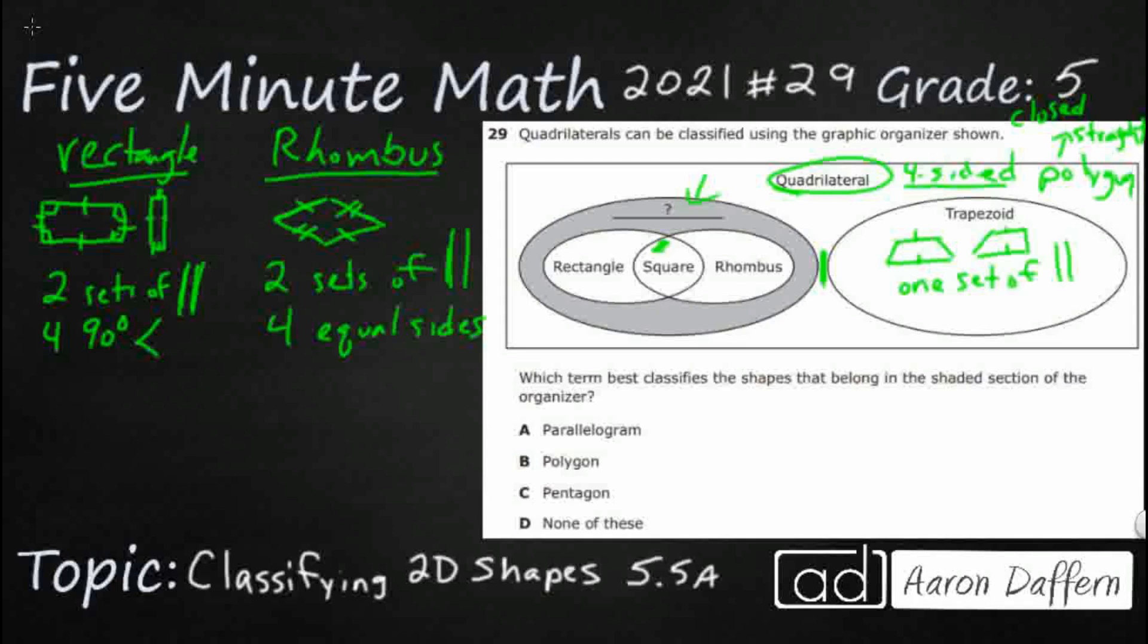And look at this square. The square is in between both of them, which means if you put both of these together, you actually get a square. And some of us might not know that a square is actually a rectangle, and a square is also a rhombus. We know what a square looks like.